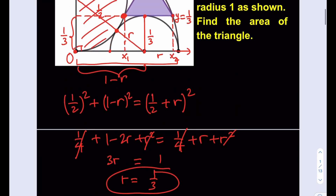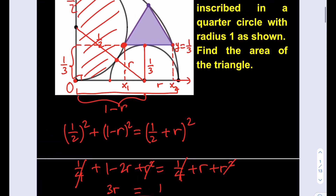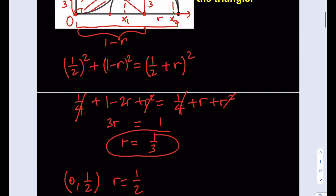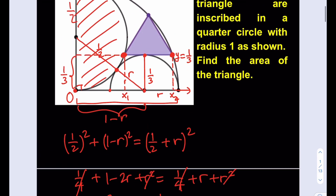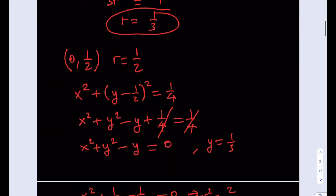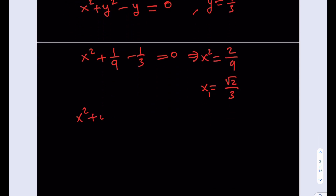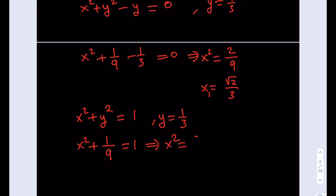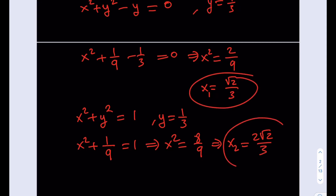By the same token, x2 is the intersection of the quarter circle and the line y = 1/3. The quarter circle is the unit circle: x² + y² = 1. Substituting y = 1/3 gives x² = 8/9, so x2 = 2√2/3. Now I have both x1 = √2/3 and x2 = 2√2/3.